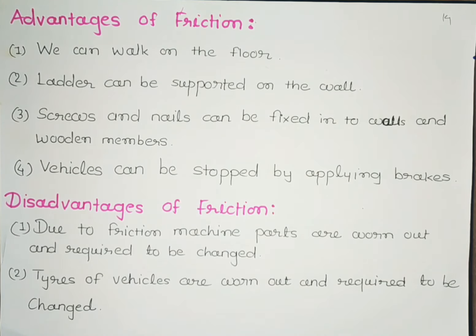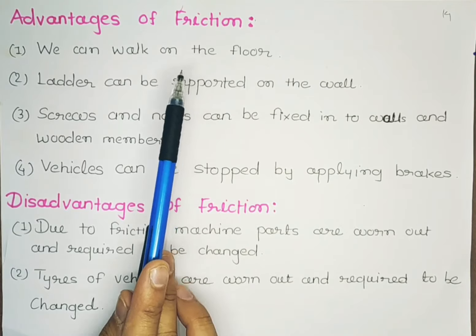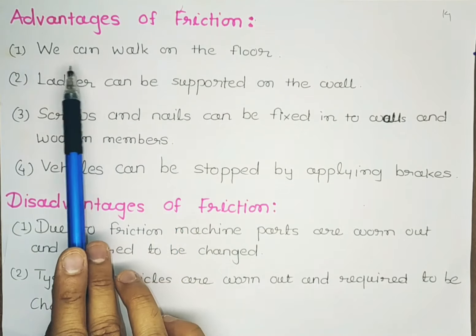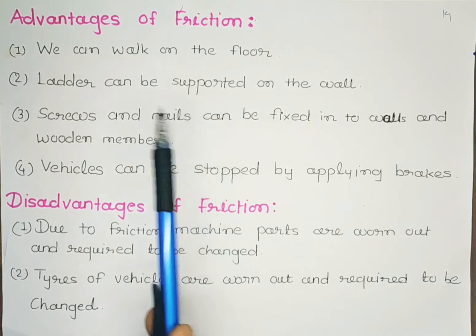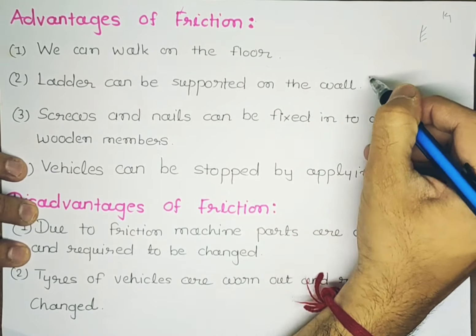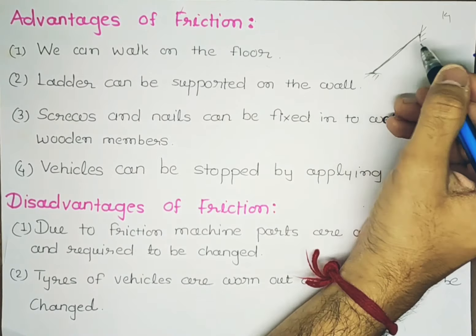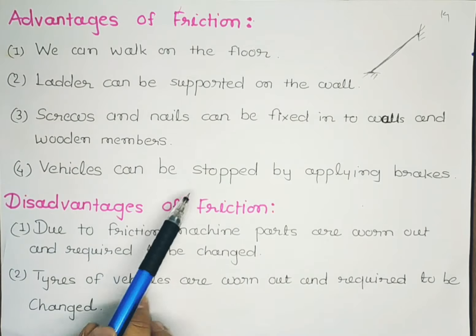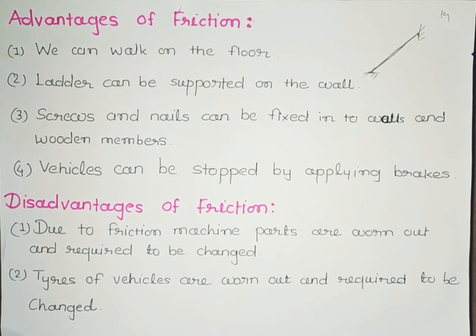After understanding the laws of static and dynamic friction, we'll look at the advantages and disadvantages of friction. Starting with advantages: first, we can walk on floors — if there was no friction and every surface was frictionless, we would not be able to walk as our legs would slip. Second, a ladder can be supported on a wall, with both the upper and bottom ends supported due to friction. Third, screws and nails can be fixed in walls and wooden members. Fourth, vehicles can be stopped by applying brakes — rubber tires with threading stop the vehicle due to friction.